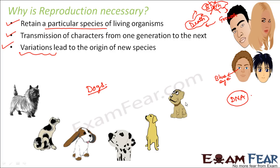How exactly inheritance happens or how exactly variation happens, we will talk about all that in genetics, which you will study in class 12. There you will understand how exactly genes get transferred from one generation to the next. For now, it is clear that reproduction, even though it is not required for the survival of an individual organism, is extremely important for the survival of the entire species over a long period of time.